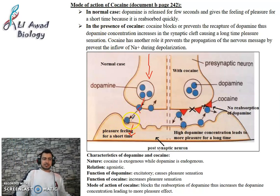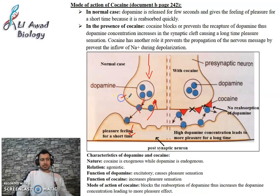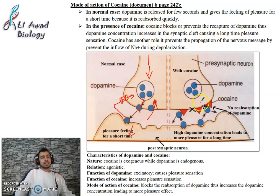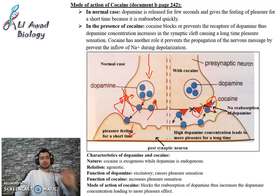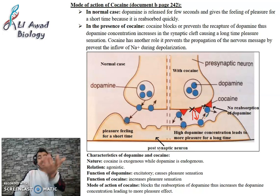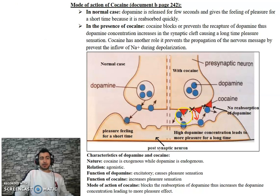In the presence of cocaine, the function of cocaine is to block the recapture pump. When it blocks the recapture pump, dopamine cannot be recaptured — the presynaptic neuron cannot reabsorb dopamine.